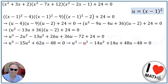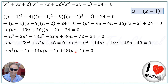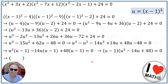Factoring out (u-1) gives us (u-1)(u²-14u+48) = 0. Now we factor u²-14u+48 by replacing -14u with -6u-8u. Between the first two terms we factor u: u(u-6), and between the last two we factor -8: -8(u-6).